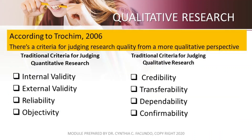According to Trachim (2006), there are criteria for judging research quality from a more qualitative perspective, as compared to traditional criteria for quantitative research. For quantitative research, we have internal validity; for qualitative, it is more on credibility. For quantitative, we have external validity; for qualitative, it is more on transferability. For quantitative, it is more on reliability; for qualitative, it is more on dependability. In quantitative research, it is more on objectivity; and in qualitative research, it is more on confirmability.